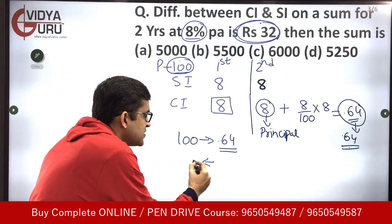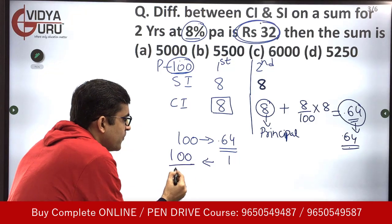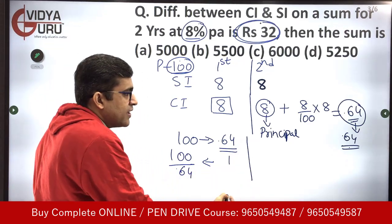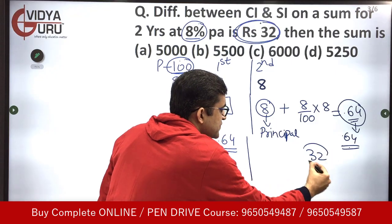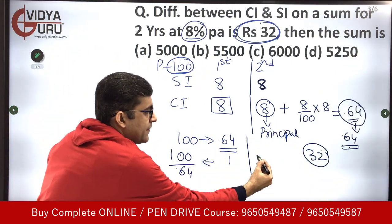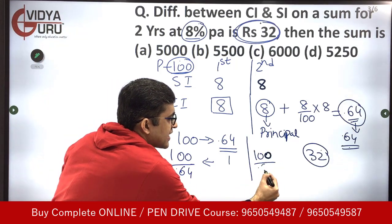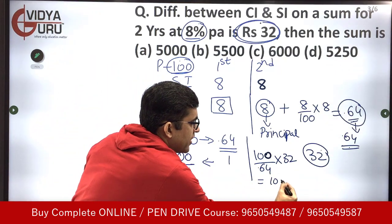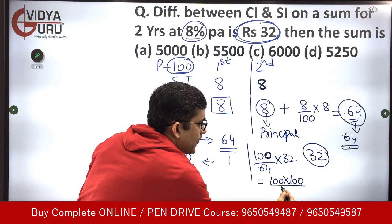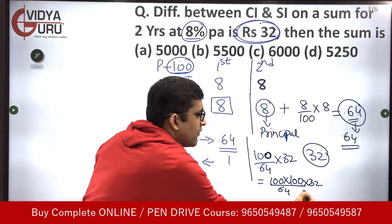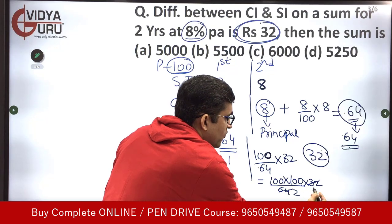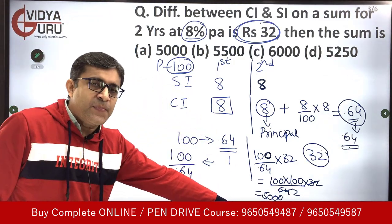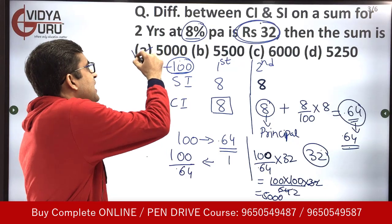If the difference was 1 rupee, then it would be 100 ÷ 0.64. And if the difference becomes 32 — because we have been given that the difference is 32 — then it is (100 ÷ 0.64) × 32. That is 100 × 100 ÷ 64 × 32, which gives us 5000 rupees. So the original sum was 5000 rupees.